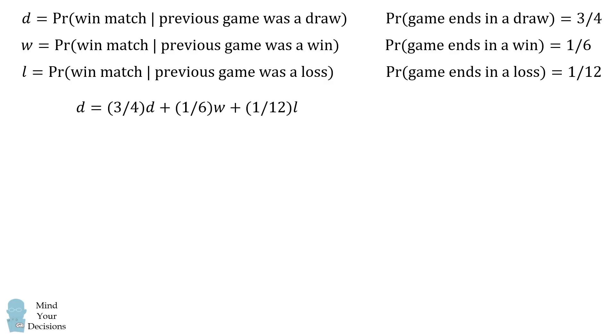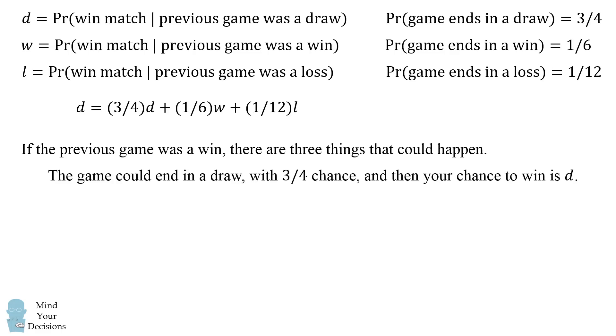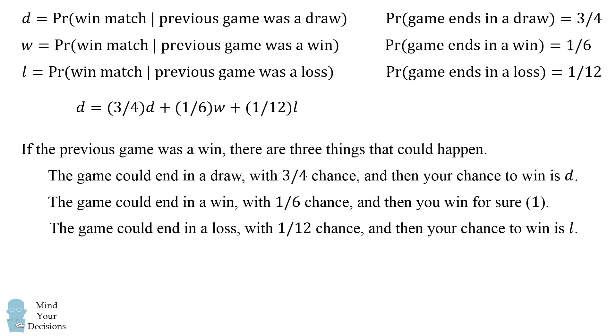So we figured out one equation for D and we can do a similar thing for W and L. Now to figure out the equation for W, consider if the previous game was a win. Again, there are three possible things that could happen. The game could end in a draw with a 3 fourths chance and then your chance to ultimately win the match will be D. The game could end in a win with a 1 sixth chance. In that case you've won two games in a row because the previous game was a win and the current game is a win. In this case you win for sure. This will be one. The game could also end in a loss with a 1 twelfth chance and then your chance to ultimately win will be L. So we can write the equation for W as follows: It equals 3 fourths times D plus 1 sixth times 1 plus 1 twelfth times L.